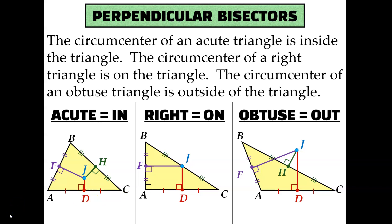To summarize where the circumcenter falls based on triangle type: for acute triangles, the perpendicular bisectors always intersect inside the triangle. For right triangles, they intersect at the midpoint of the hypotenuse — so that midpoint is the circumcenter. And for obtuse triangles, the perpendicular bisectors actually intersect outside the triangle — the circumcenter, like point J, is outside.